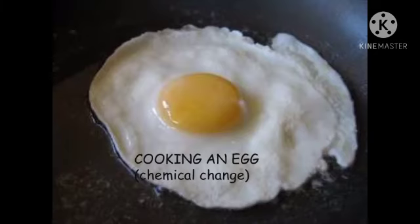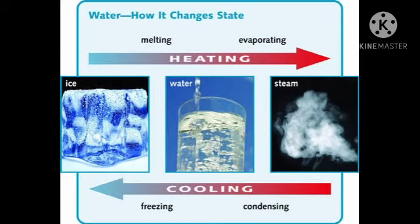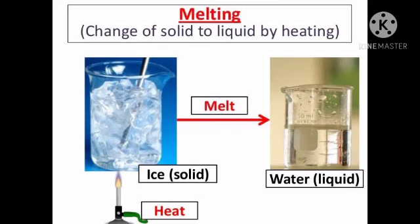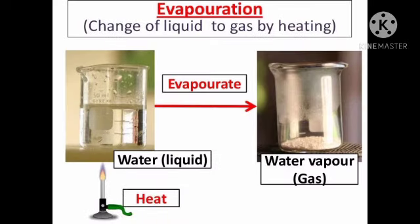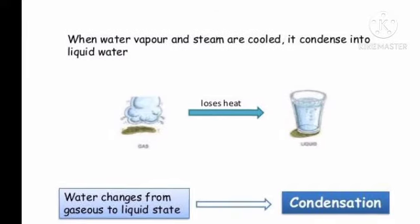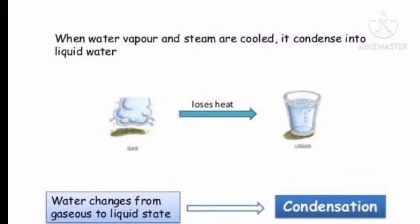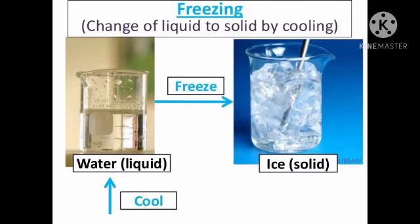Let us now understand the physical changes that take place in water. Water exists in three states: solid, liquid, and gas. Change of states takes place either by heating or cooling. By heating, energy is supplied; by cooling, energy is taken away. Processes connected with changes in states of water: ice into water on heating is called melting; water into steam on heating is called vaporization; steam into water on cooling is called condensation; water into ice on cooling is called freezing.